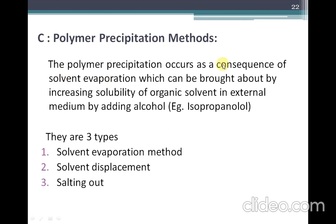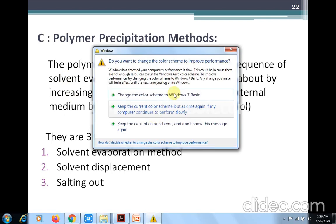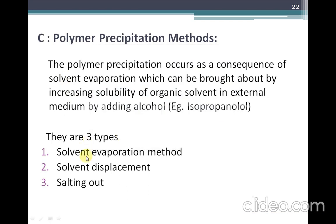The next category is polymer precipitation methods. Polymer precipitation occurs as a consequence of solvent evaporation, brought about by increasing the solubility of organic solvent in the external medium by adding alcohol. Polymer precipitation methods are further divided into three types: solvent evaporation, solvent displacement, and salting out.